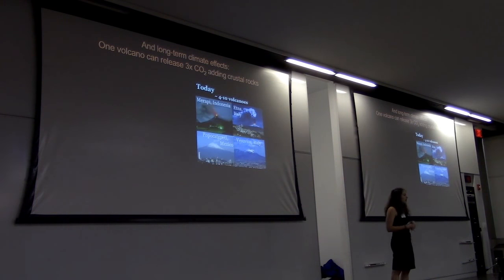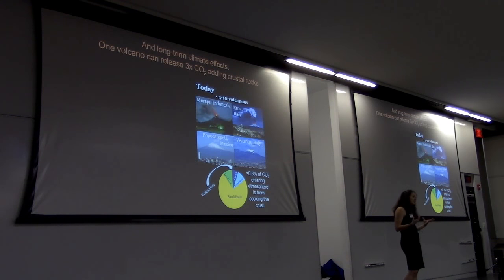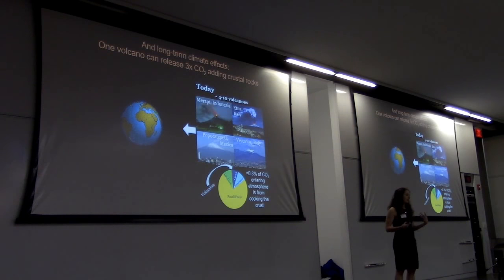Only a couple volcanoes around the globe today actually have these processes occurring deep underneath the ground. And with the addition of human input, that means that only a portion of a portion of the carbon dioxide going into the atmosphere is from cooking the crust.